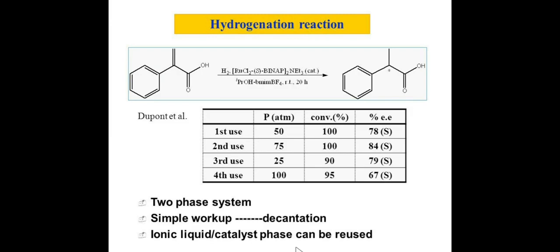The next reaction is hydrogenation using hydrogen gas and metal. Typical hydrogenation reactions are carried out in presence of hydrogen gas and palladium catalyst or palladium on charcoal. If we replace palladium by ionic liquid and another kind of metal, we get higher percentage of product as well as good selectivity or good enantiomeric excess.